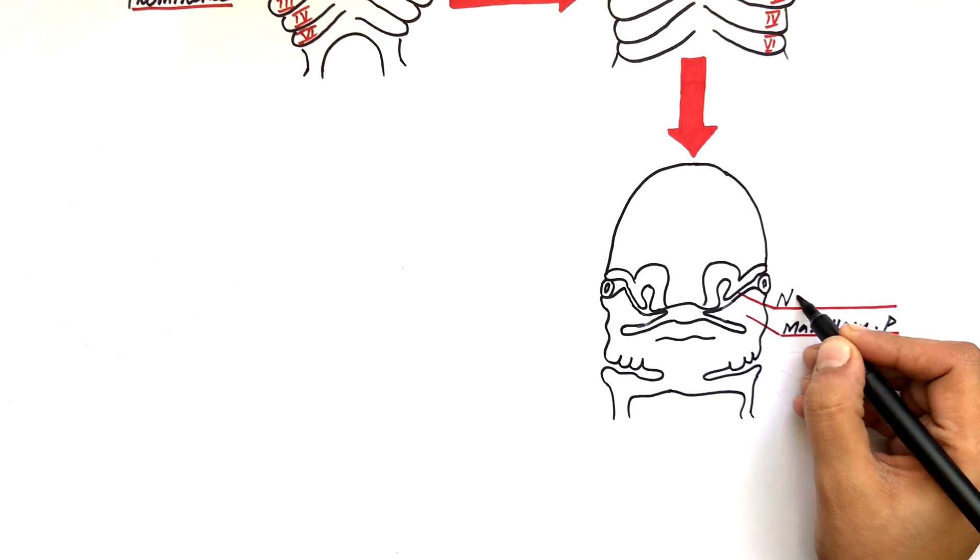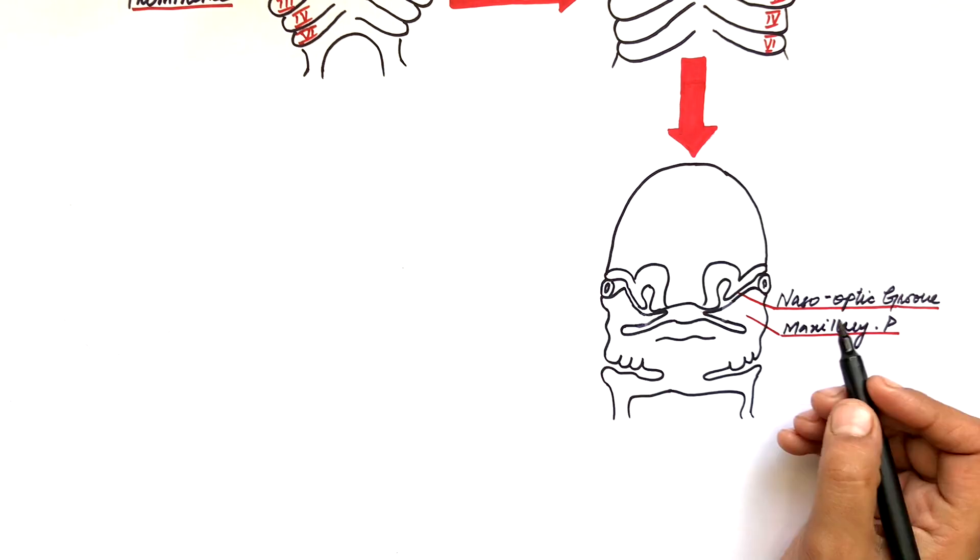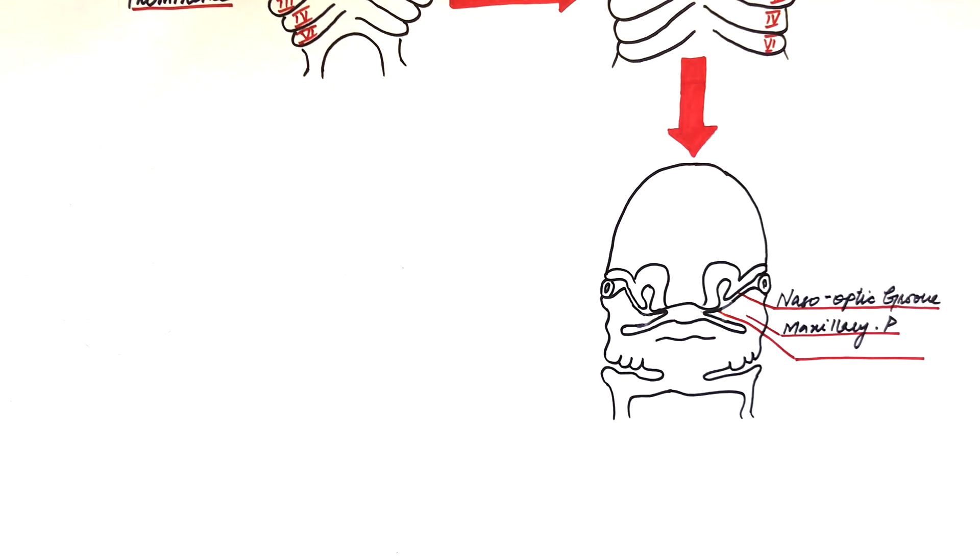These grooves are the naso-optic groove separating the maxillary process from the lateral nasal process, and the bucconasal groove which separates the maxillary process from the medial nasal process. The external ear nodules are also seen at the first pharyngeal cleft by this time.